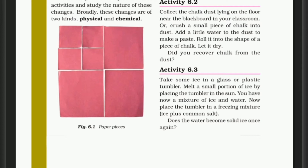Now we have Activity 6.3. Take some ice in a glass or plastic tumbler and melt a small portion of ice by placing the tumbler in the sun. You now have a mixture of ice and water. Then place the tumbler in a freezing mixture of ice plus common salt. Does the water become solid ice once again?